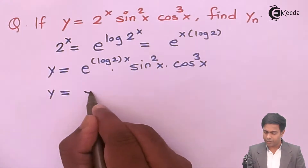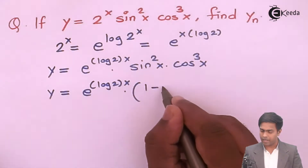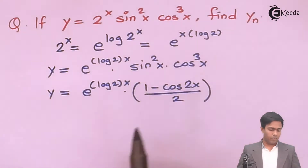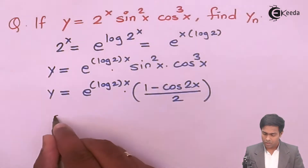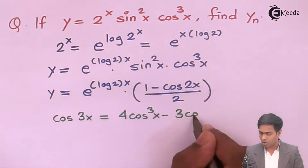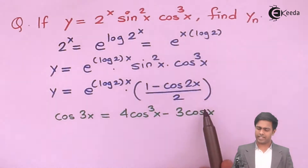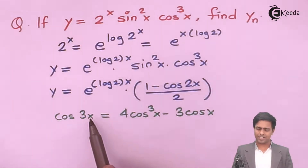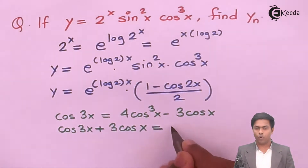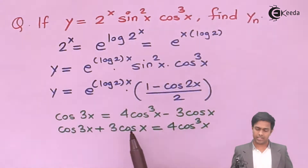First I will find out the values for sin square x and cos cube x using trigonometric formulas. So y equals e to the power log 2 times x, and for sin square x we know the formula is 1 minus cos 2x, all over 2. For cos cube x we will use the formula for cos 3x, which is: cos 3x equals 4 cos cube x minus 3 cos x.